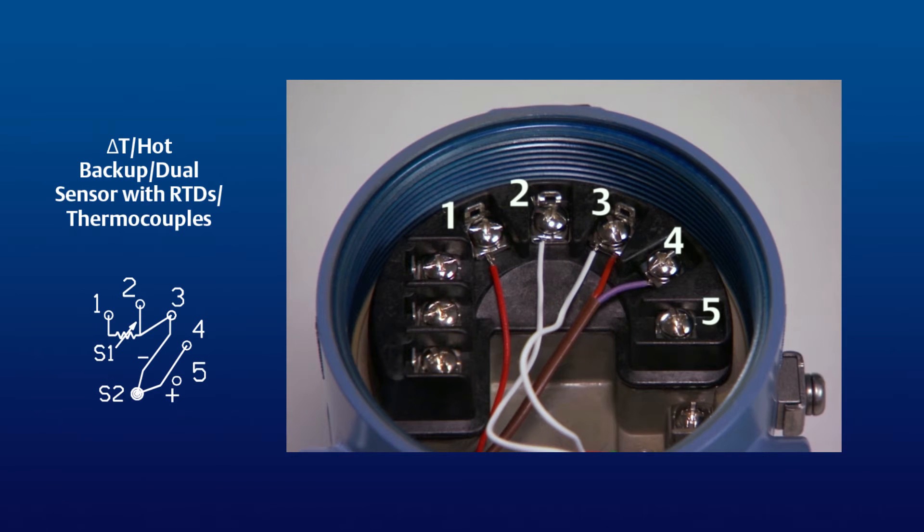Here is the proper wiring configuration for a 3-wire RTD sensor and a thermocouple. Note that the single red wire from the RTD is connected to terminal 1, and the two white wires are attached to terminals 2 and 3. Then the negative wire from the thermocouple is also connected to terminal 3, with the positive wire connected to terminal 4.